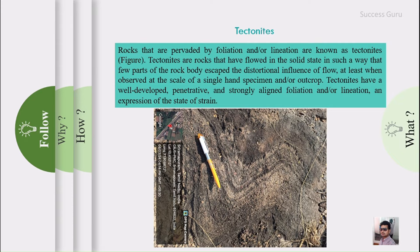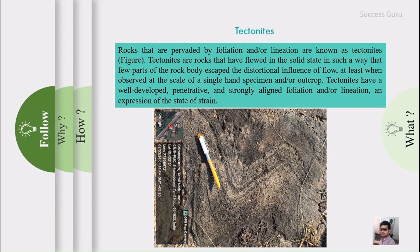A tectonite is a rock that has moved in a solid state — not in a liquid state like magma or water. It is movement of a rock while remaining solid, just like a glacier or plate movement. By definition, a tectonite should not show any significant distortion when observed at the megascopic scale, though minor distortions may sometimes appear under the microscope.